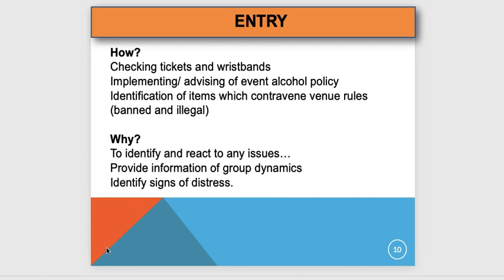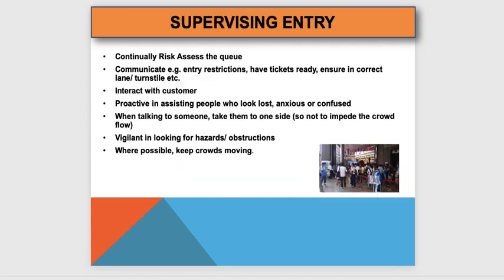Your job is to risk-assess the queue: is it too busy, does that group look suspect? Communicate entry restrictions — have tickets ready, ensure people are at the correct turnstile. Be proactive: if VIP tickets go left and normal tickets go right, tell people as they approach. Interact with customers — they appreciate knowing where to go and it keeps things moving smoothly.